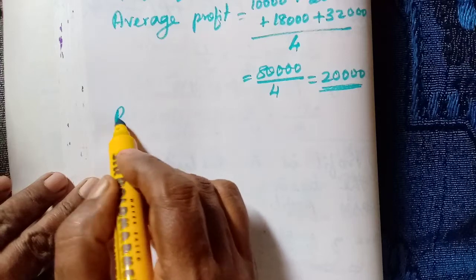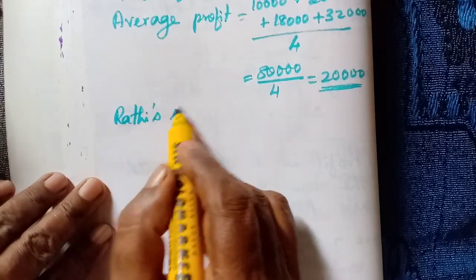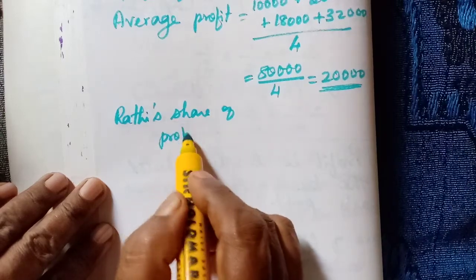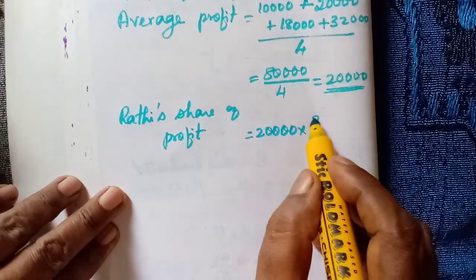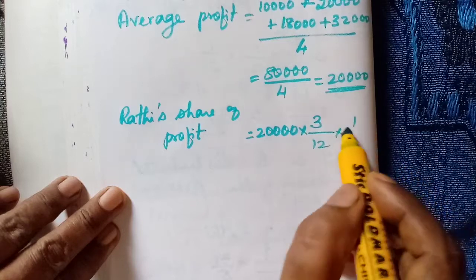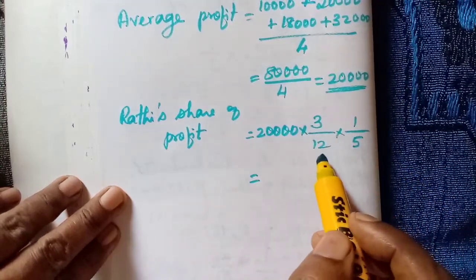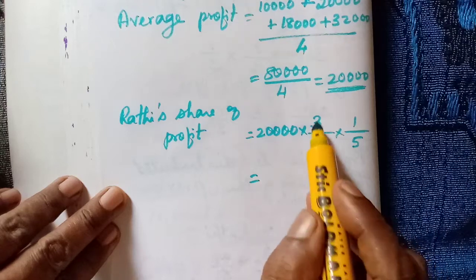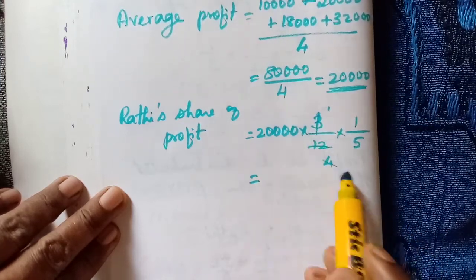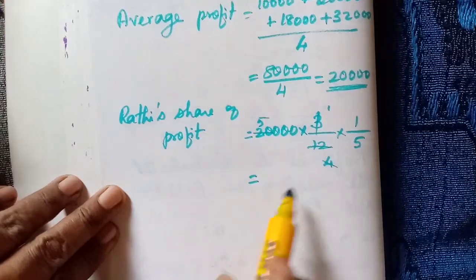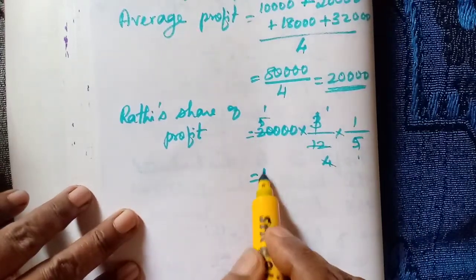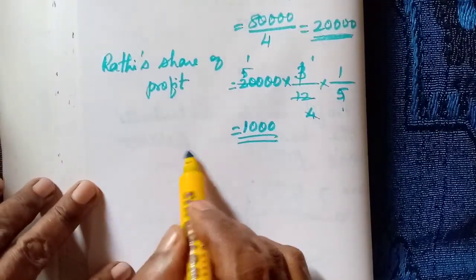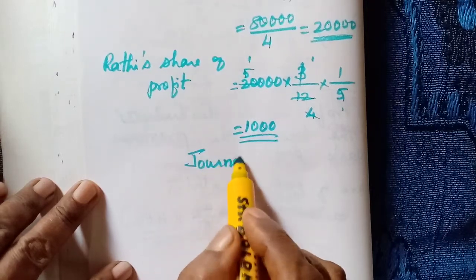Now calculate Rathi's share of profit: average profit 20,000 into 3 by 12 into 1 by 5 equals 1,000. Now prepare the journal entry. Date: 31st March 2018. Profit and loss suspense account debited to Rathi's capital account — same entry. Profit and loss suspense account must be debited; we are transferring that to the retiring partner's capital account.